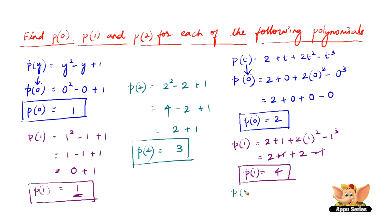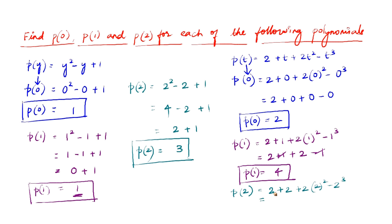For p of 2, we substitute 2 in the place of t: 2 plus 2 plus 2 into 2 squared minus 2 cubed. 2 plus 2 is 4, plus 2 into 4 is 8, minus 2 cubed which is 8. The plus 8 and minus 8 cancel, therefore p of 2 equals 4.